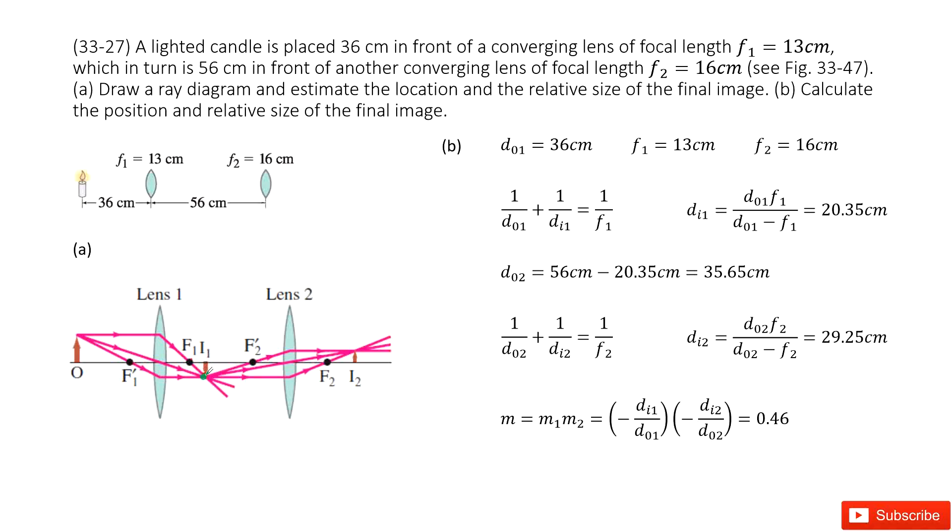And then we can consider the image for the first lens is the object for the second lens. So we come to this second lens. We can draw two pictures. First, the light travels in parallel, and then it goes through the focal point F2.